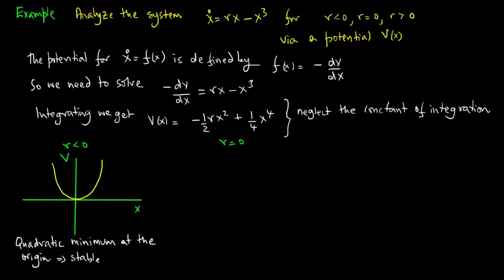For r equals zero, again plotting v versus x, the minimum is at the origin so the origin is still stable.